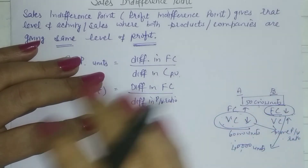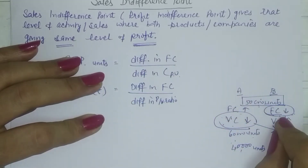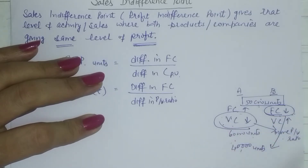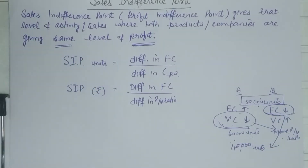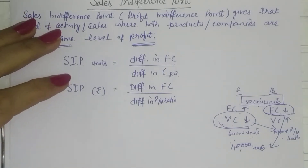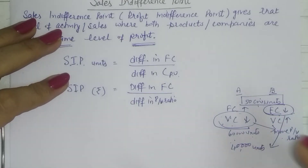Whatever the level of activity, fixed cost remains the same — whether it is 40,000, 60,000, 30,000, or 20,000, fixed cost does not change. So in times of lower demand, we should choose a method with lower fixed cost, because this will help us retain some profits or incur lesser losses. Lower fixed cost means a lower breakeven point.